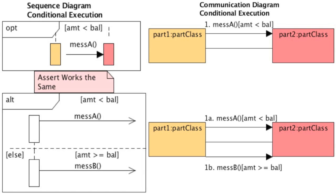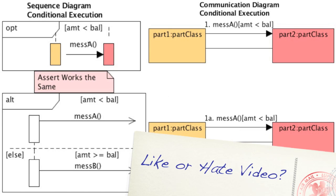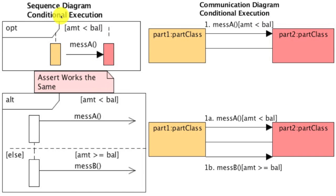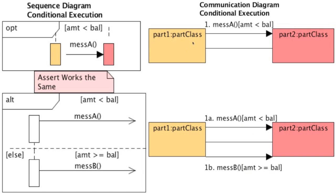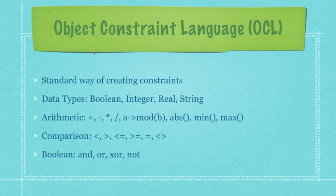To show that a message will be executed based on conditions, we're going to use guard conditions. Here's a guard condition and here is the same guard condition on the communication diagram side. Assert works in exactly the same way. You can see here I have option and alt, which works like an if or an else statement. In this situation, we're just going to send these two messages in parallel, but we are not going to execute certain messages if the guard statement does not come back as true. That's really how that works.